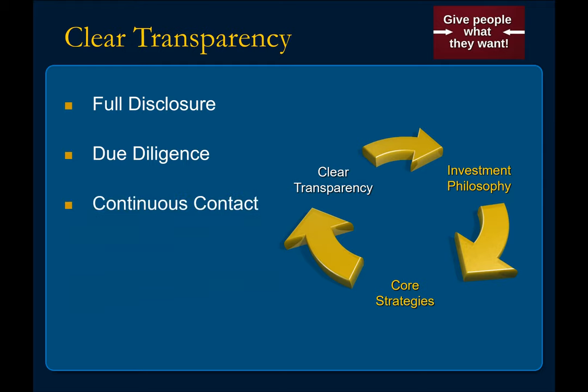Continuous contact means that you're not leaving a client the minute the contract is signed, sealed, and the ink is dried. You're there for ongoing support and help, and certainly you're there to help move this client towards financial independence — which also helps you, because there are other solutions besides this one transaction that you just completed. You should have multiple transactions, and there are other things that are going to come into this cycle of becoming financially independent.